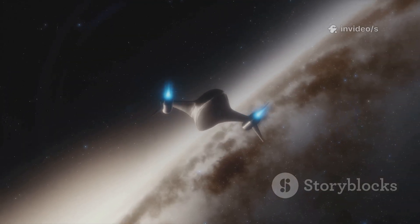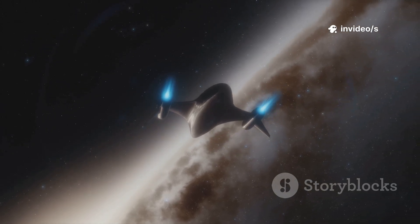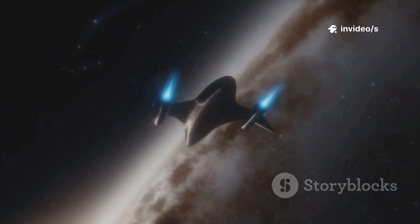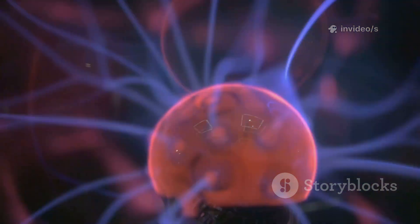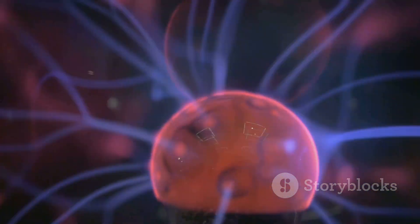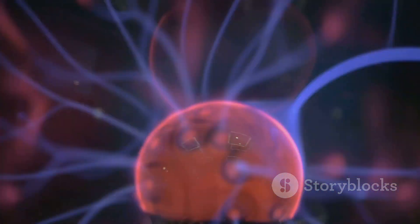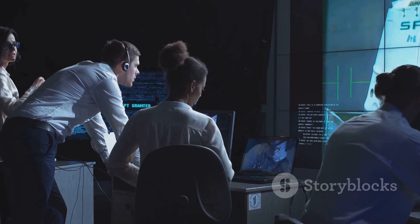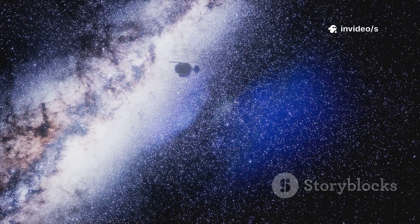Voyager 2 had entered a new region of space, fundamentally different from the one it had just left. This was the impossible encounter. A sharp edge, a clear boundary, a wall of plasma in the middle of nowhere. Our science said such structures shouldn't exist.